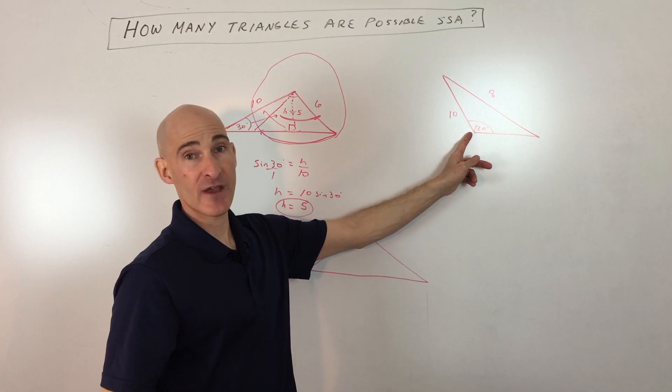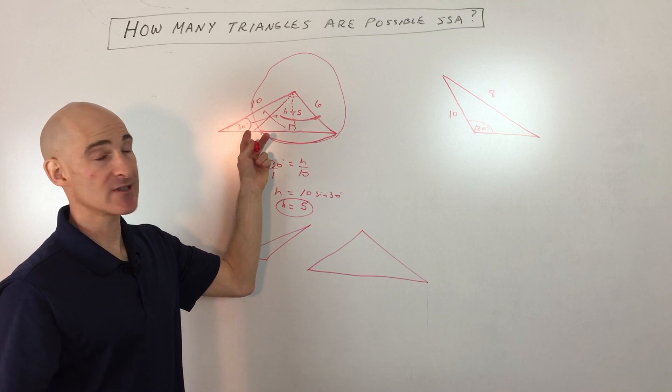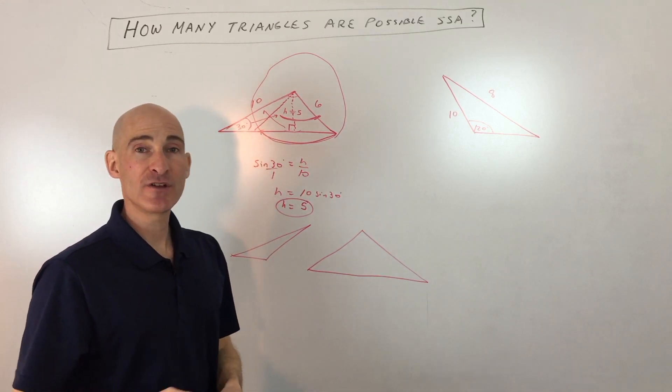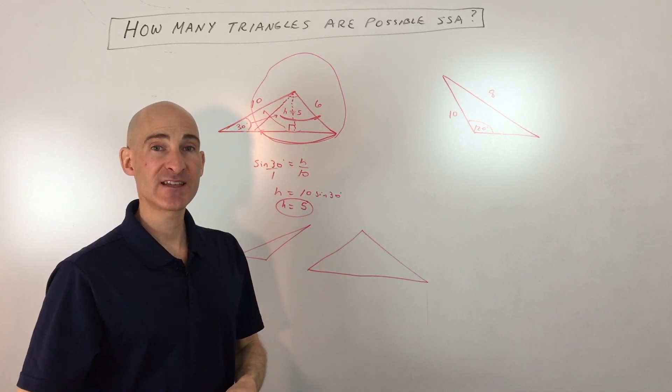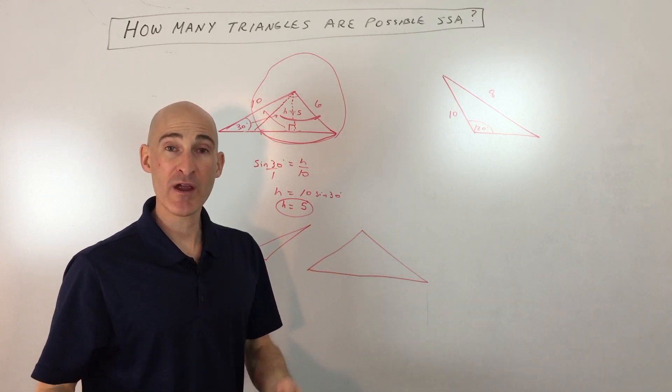We're going to talk about if you have an obtuse triangle where this angle is greater than 90 degrees. In this case, this was an acute angle less than 90. But I wanted to mention, if you're preparing for the ACT or SAT, talking about trigonometry and these types of things,